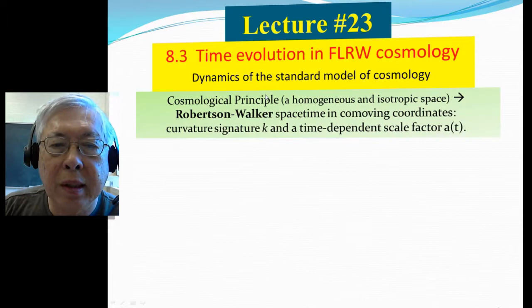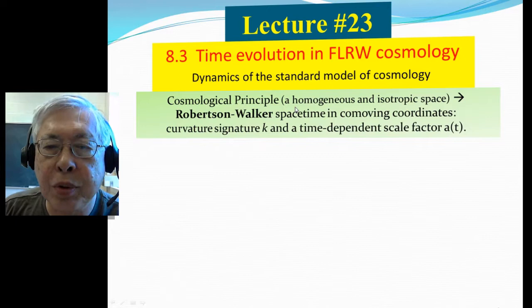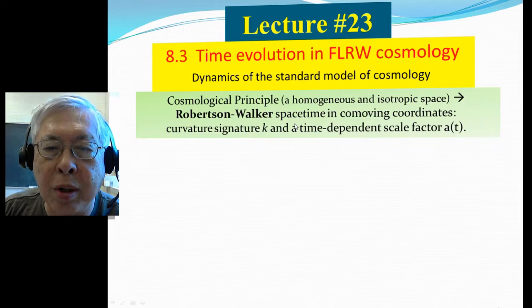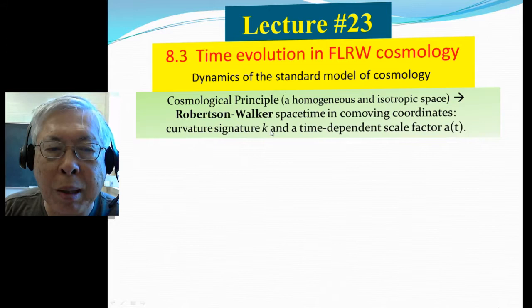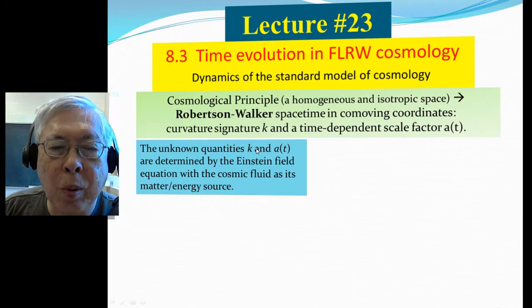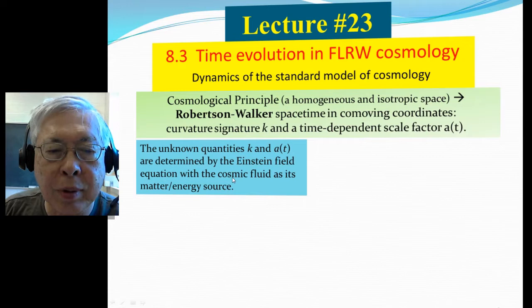Remember the cosmological principle, which states the space is homogeneous and isotropic at each epoch. Then we deduce that the spacetime has a Robertson-Walker metric in the comoving coordinates, which has two important parameters: the curvature signature k and the time-dependent scale factor a(t). So the unknown quantities k and a(t) are determined by the Einstein field equation, with cosmic fluid as the matter-energy source.